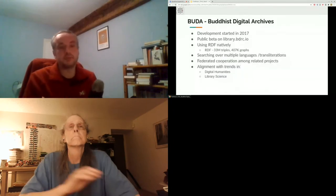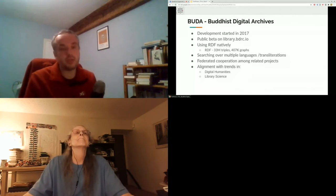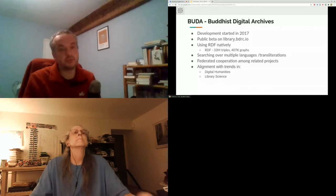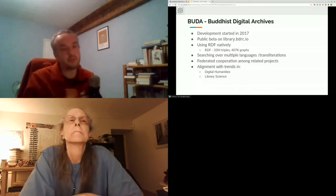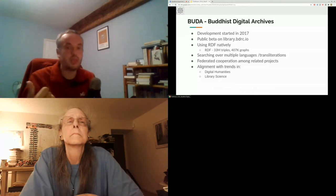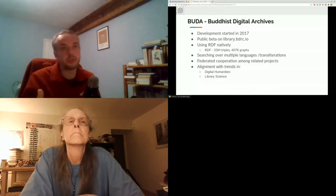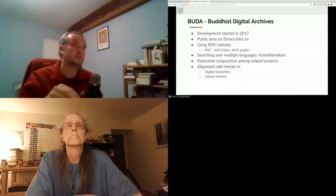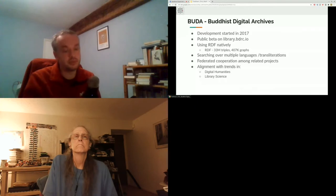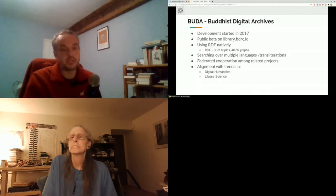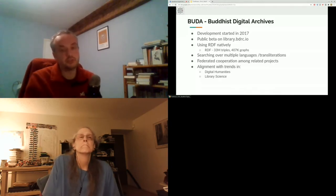The Boudin platform development started in 2017. It's really at the end of development with a public data library at library.bdrc.io. We are using RDF natively and have about 33 million triples. Two strong requirements of the platform were the ability to search in different transliterations for each language, and to find results in the databases of our partners — we have about 15 partners collaborating on sharing data. One of the reasons we used RDF is to align with trends in digital humanities and library science.